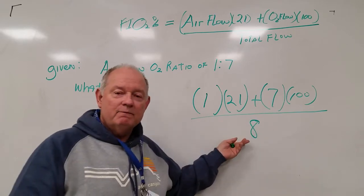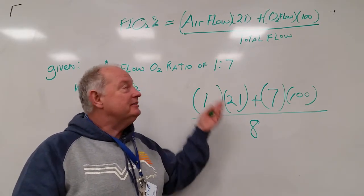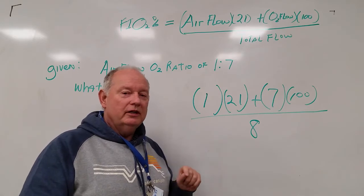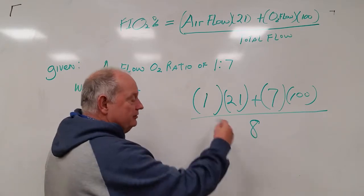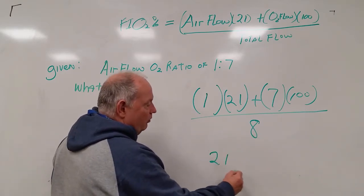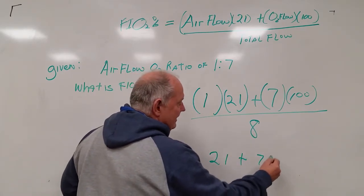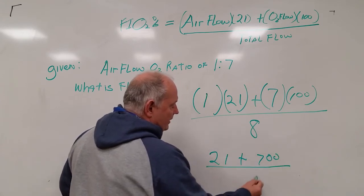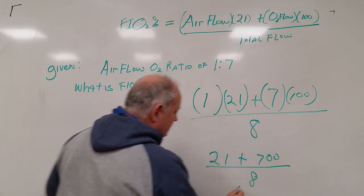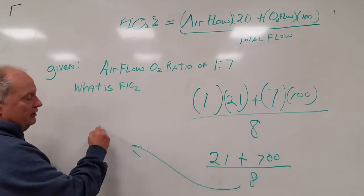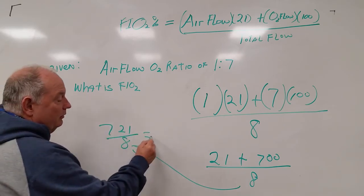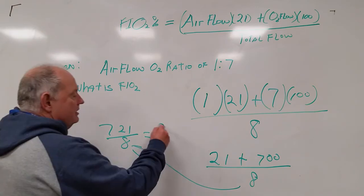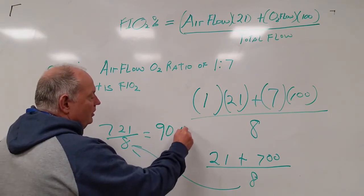Eight is the flow factor. And since we set this to one unit, we can say in this case eight is the actual total flow. So we do some simple math. 21 plus 700 divided by eight. Let's go over here. 721 divided by eight. We can all do that in our head. 90.12.